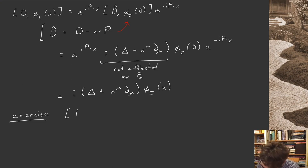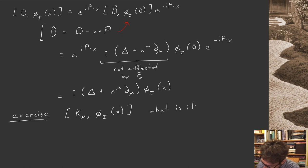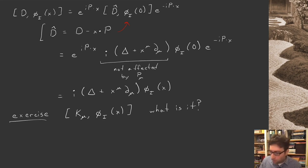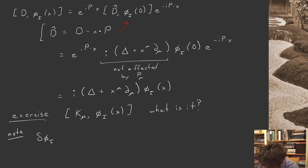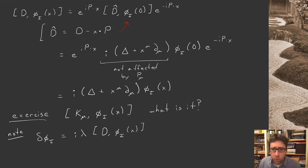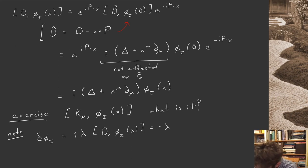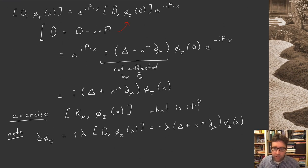I want to make a comment about notation. I'm writing these commutators [D, phi_i(x)], and earlier we had a slightly different notation: delta phi. These are closely related — delta phi_i equals i*lambda times [D, phi_i(x)]. The commutator gives you part of the infinitesimal change of the field, which you dress up by a factor of i and lambda to get the full action. Written out in detail: delta phi = -lambda(delta + x^mu ∂_mu) phi_i(x). This commutator is telling you the infinitesimal change of the field in response to dilatations.